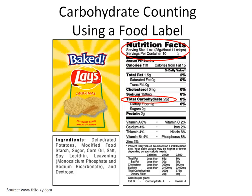Once you have weighed one ounce of crisps, you can look further down on the food label to find the total grams of carbohydrate. One ounce of crisps equals 23 grams of carbohydrate.